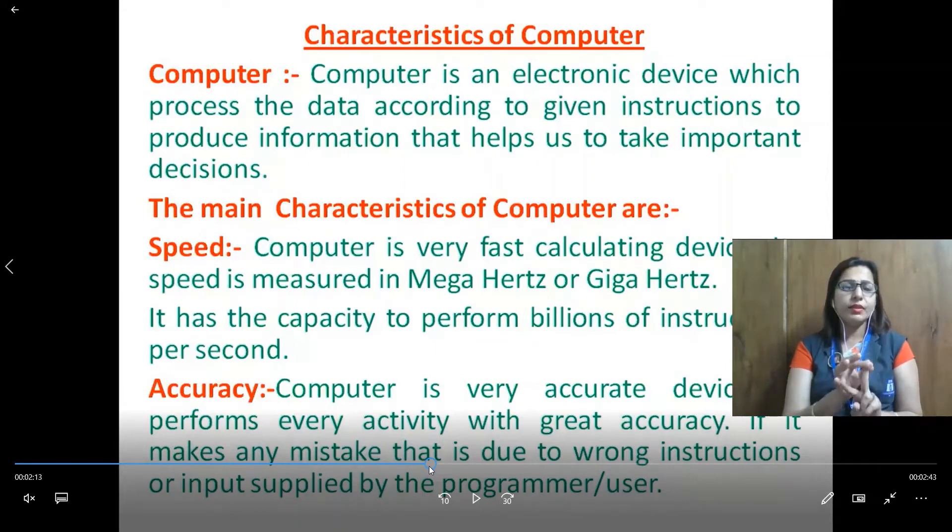Second is software. Softwares are the set of instructions which tell the computer system what to do and how to do and how to perform a particular task. Software further categorizes in two categories: system software and application software.